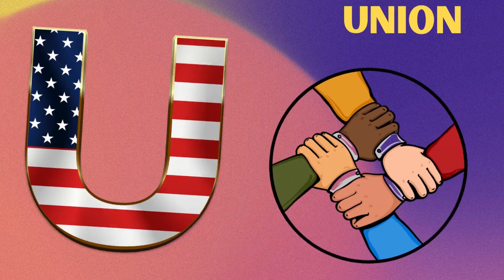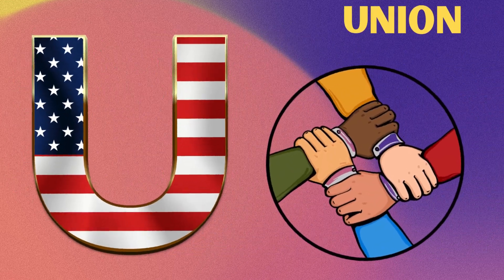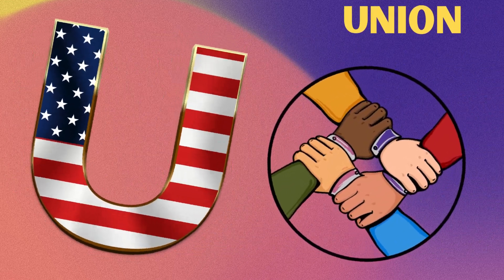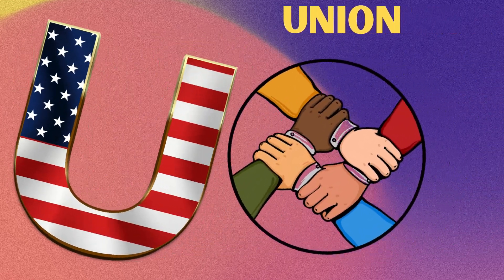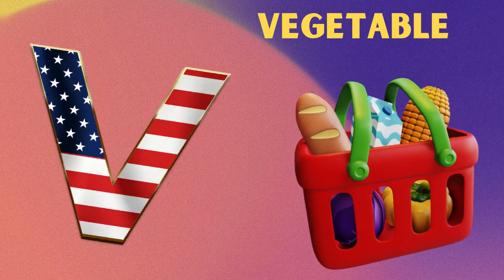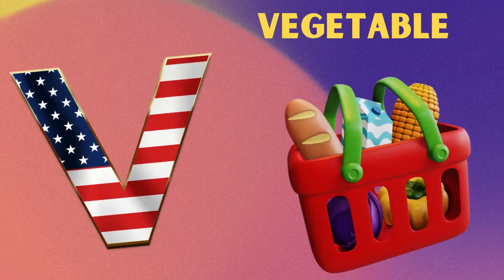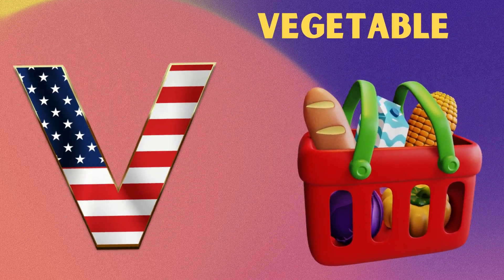U is for union, union. V is for vegetable, vegetable.